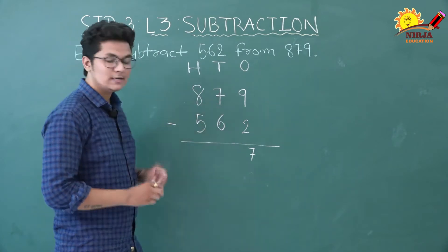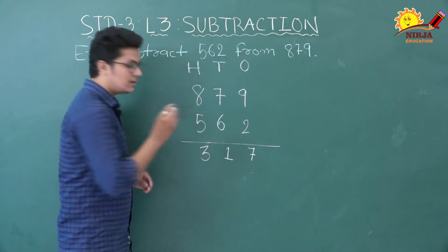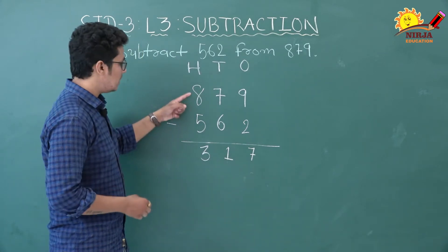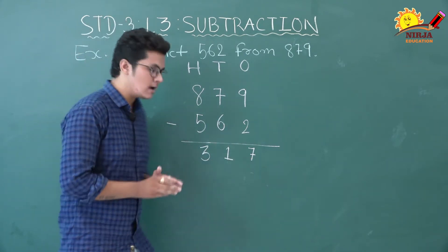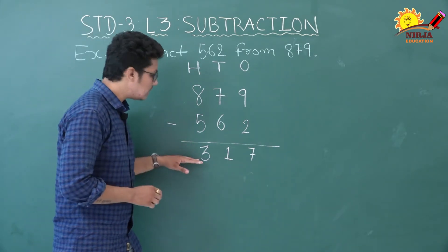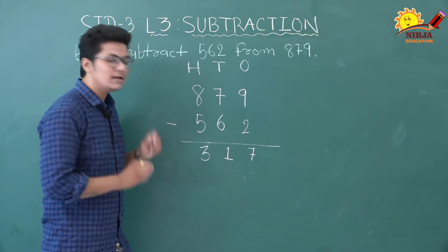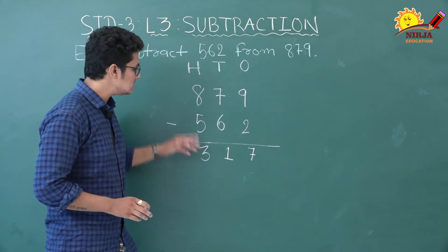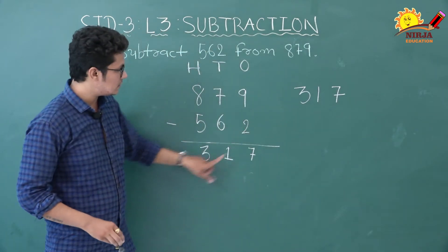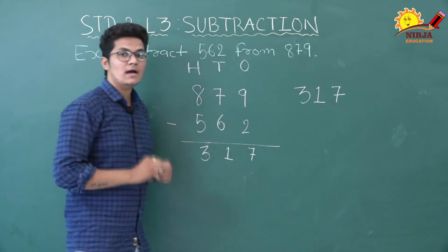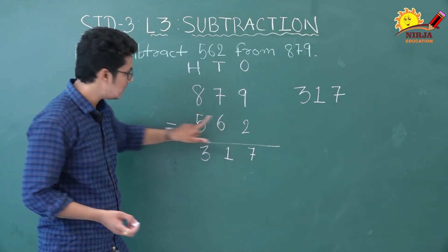We will subtract from ones place first. Nine minus two is seven. Seven minus six is one. Eight minus five is three. So our difference is 317. Now we have to check whether this answer is correct or not. We will add the difference to the smaller number.